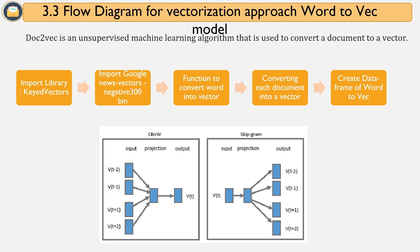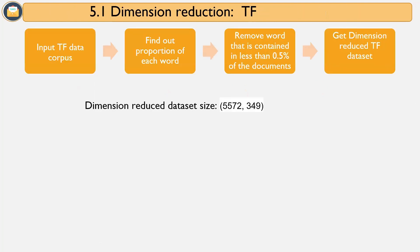In the CBOW model, the distributed representations of the context are combined to predict the word in the middle. In the skip-gram model, the distributed representation of the input word is used to predict the surrounding context words.